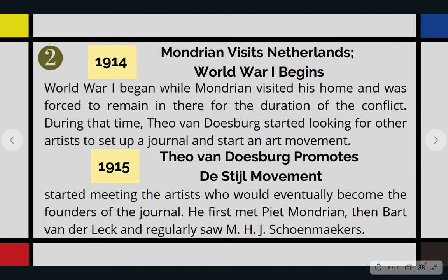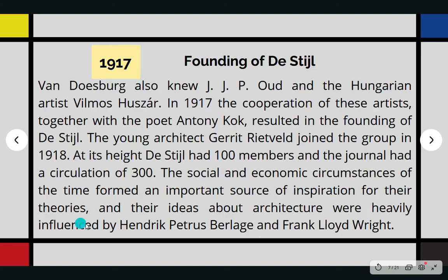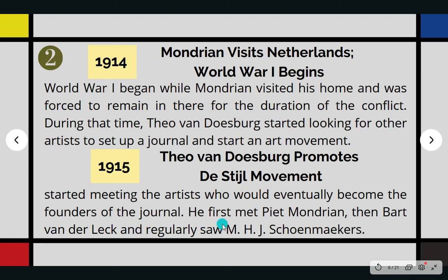Nevertheless, in this period of repatriation, he devoted a great deal of thought to formulate his future artistic program, thanks to Theo van Doesburg promoting the movement. In 1915, he started meeting the artists who would eventually become the founders of the journal. He first met Piet Mondrian, then Bart van der Leck, and regularly saw Schoenmakers. During Mondrian's stay at the Laren Artists Colony, he met Bart van der Leck and Theo van Doesburg. Little did they know, it was the stepping stone of founding De Stijl.